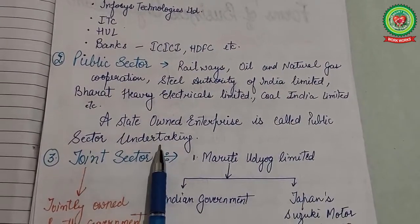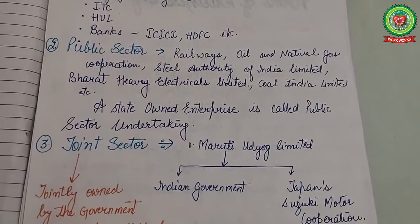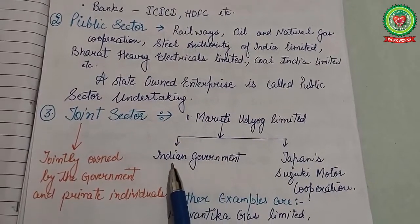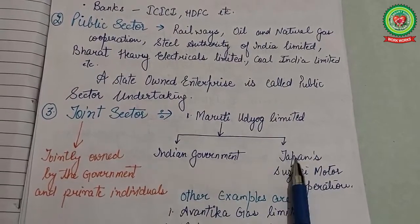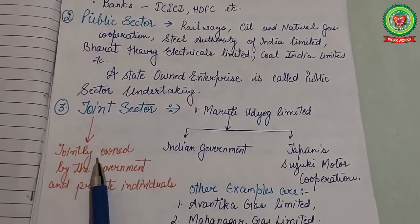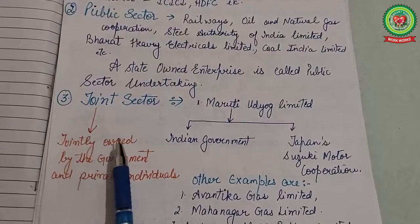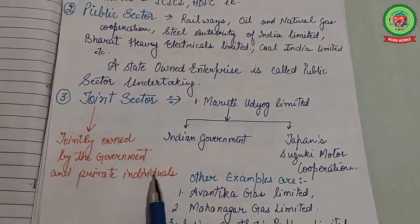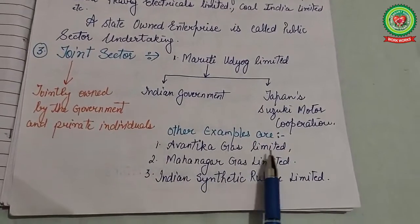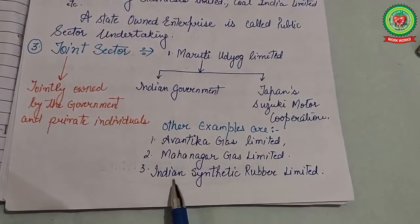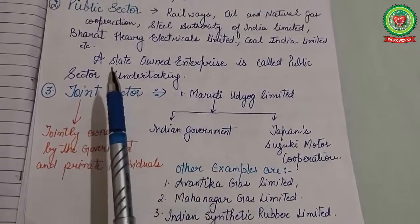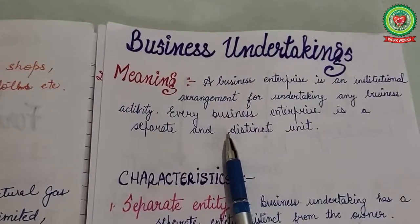Next is joint sector undertaking. For example, Maruti Udyog Limited, which is jointly owned by the Indian government and Japan's Suzuki Motor Corporation. Corporations that are jointly owned by the government and private individuals are called joint sector undertakings. Other examples include Avantika Gas Limited, Mahanagar Gas Limited, and Indian Synthetic Rubber Limited.